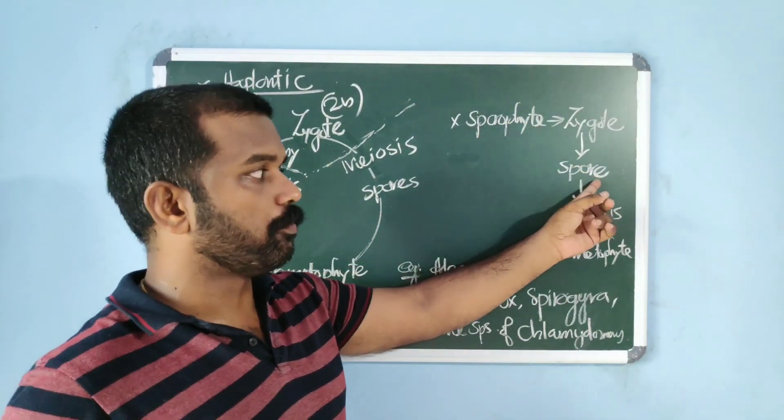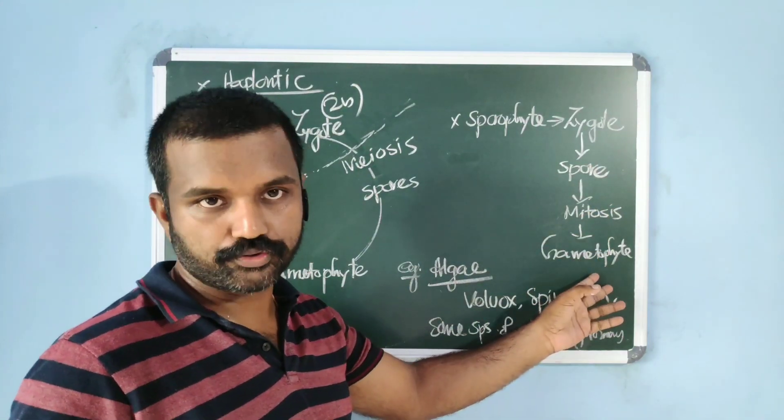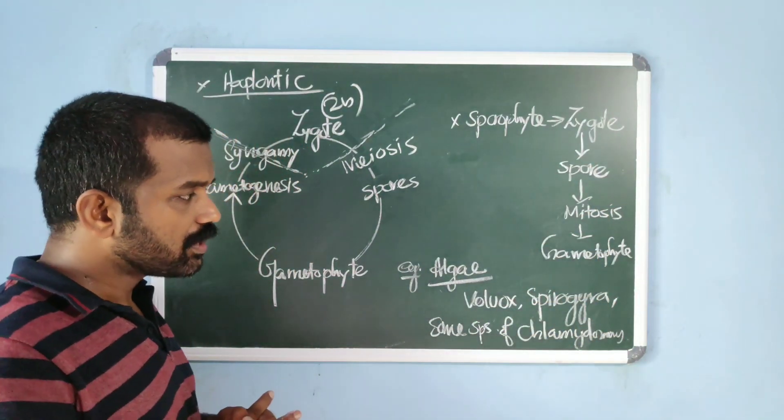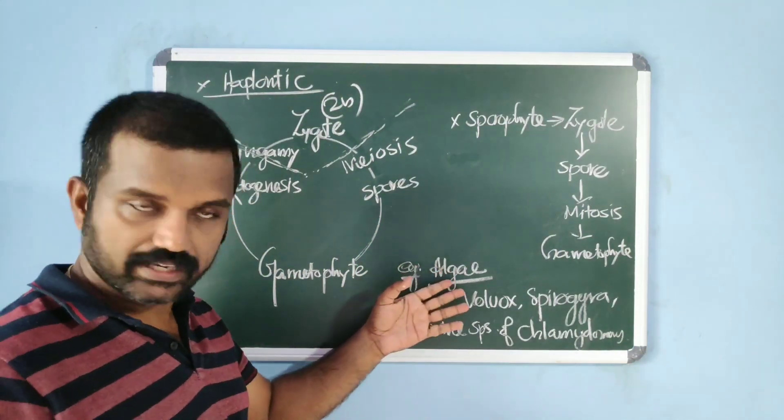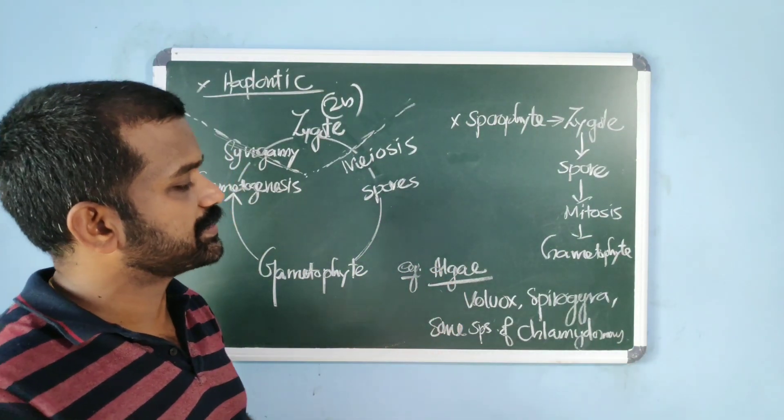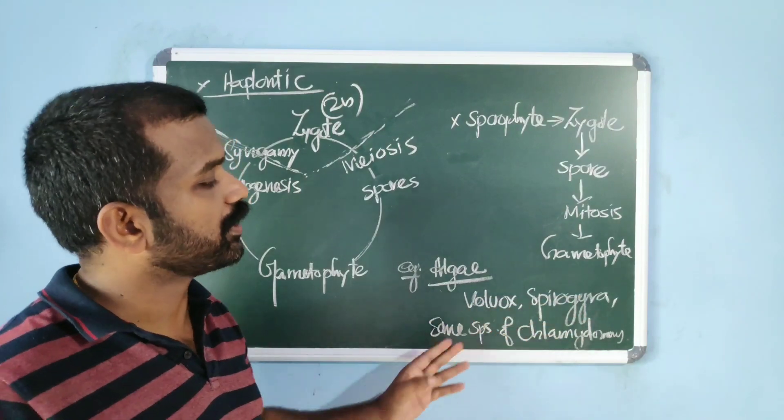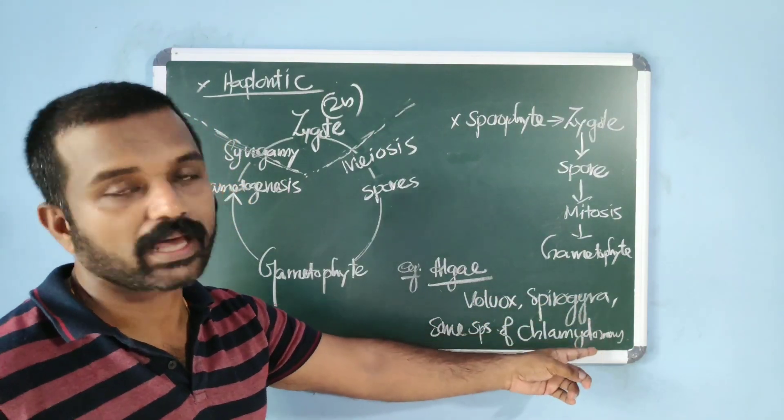Zygote produces spore, spore forms gametophyte. This type of life cycle is exhibited by algae. A few examples here are Volvox, Spirogyra, and some species of Chlamydomonas.